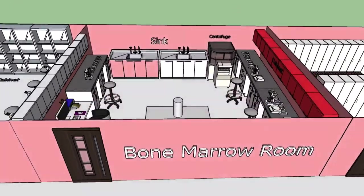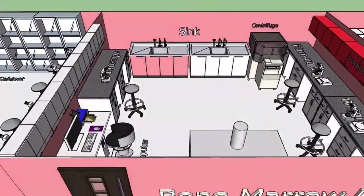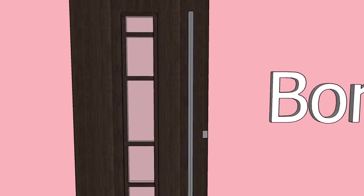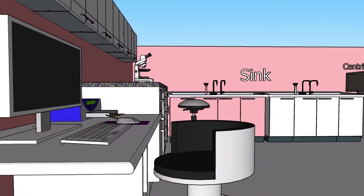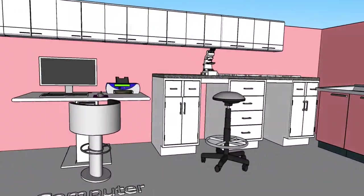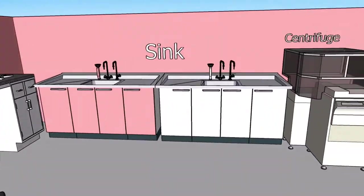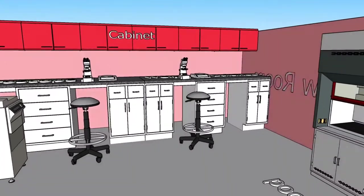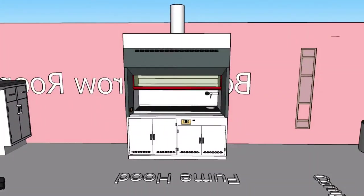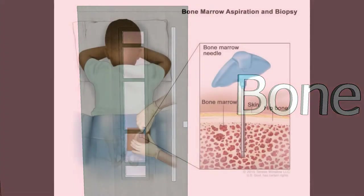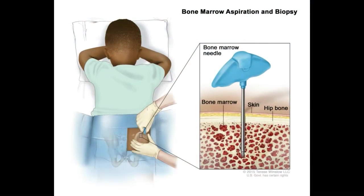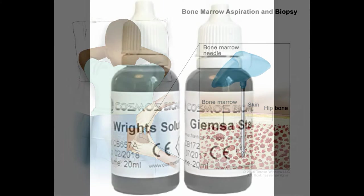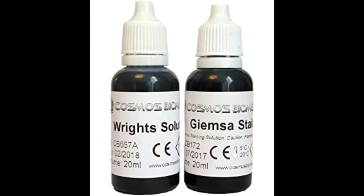Next is the bone marrow section. This section consists of a culture room, workbench, dark room, and microscope room. Examination of bone marrow aspirate and trephine biopsy is essential for the diagnosis of bone marrow disorders. Collection of bone marrow aspirate from the patient enables examination of the bone marrow; MGG and Wright staining are carried out for bone marrow microscopic examination.